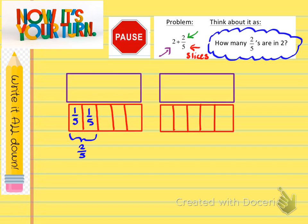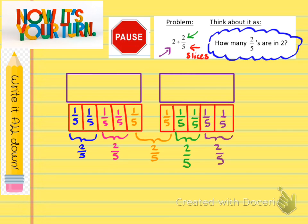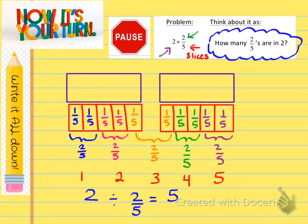So we did 1 fifth and 1 fifth — that's a group of 2 fifths. Then another 1 fifth and 1 fifth — another group of 2 fifths. Then another 1 fifth and 1 fifth — a group of 2 fifths. Then 1 fifth and 1 fifth — another group of 2 fifths. And lastly, 1 fifth and 1 fifth — another group of 2 fifths. Now that we're done bracketing them all, we can see that we have a total of 1, 2, 3, 4, 5 groups. So to answer our question: 2 divided by 2 fifths equals 5. This is how you use models to solve dividing whole numbers by fractions.